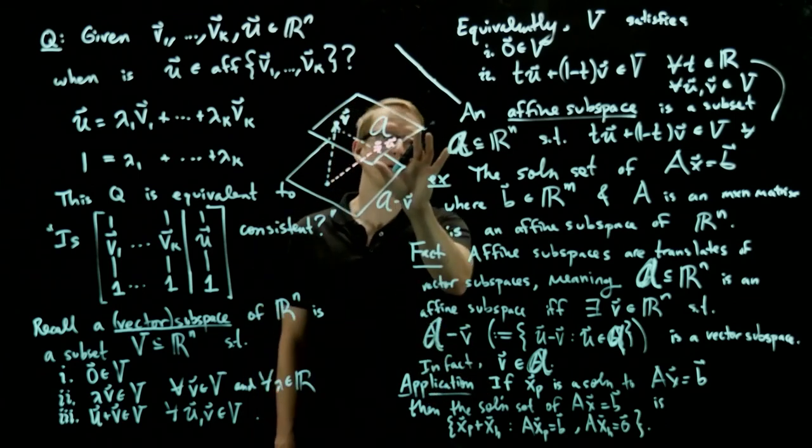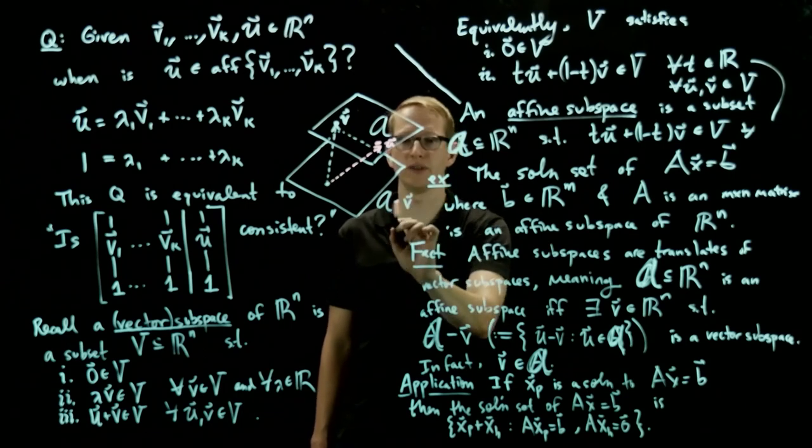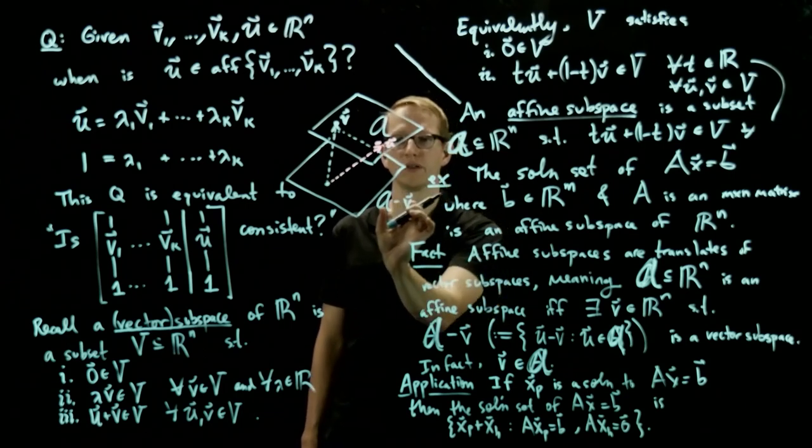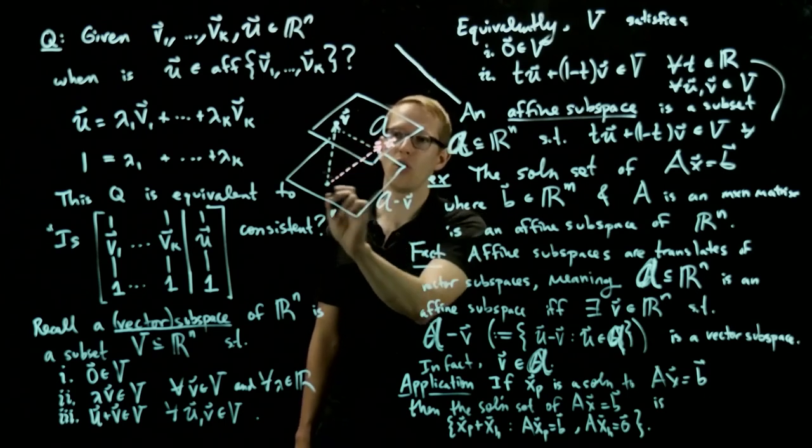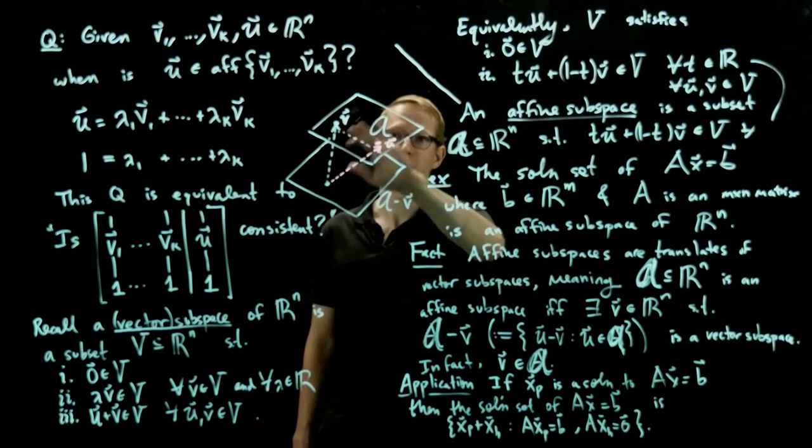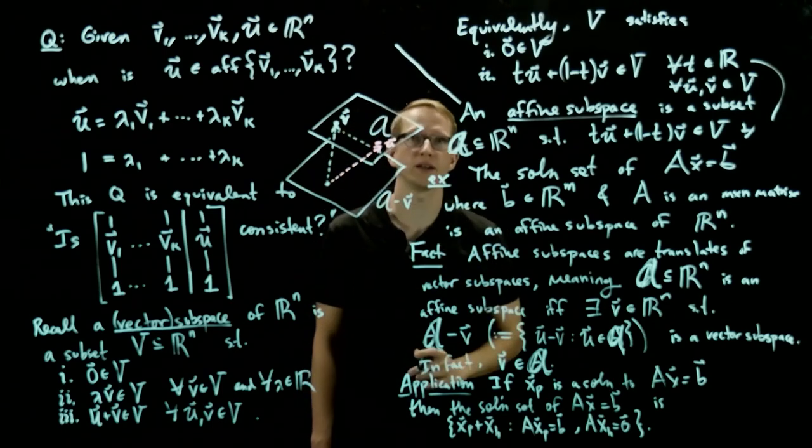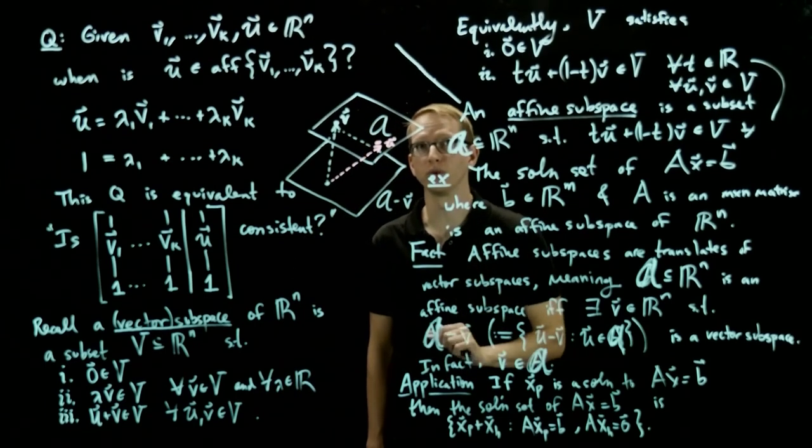So if A represented the solution set of an inhomogeneous system, and A minus v represents the solution set of a homogeneous system, then all we have to do is pick one of these solutions, and then all of these solutions, and then take that solution and translate it by that vector, which was a particular solution of the inhomogeneous system.